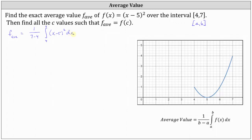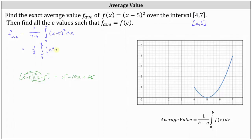To evaluate the integral, we'll either perform u-substitution or square (x-5). Let's go ahead and square (x-5). When squaring a binomial, there are always four products: x times x, which is x squared, then minus five x minus five x, which is minus 10x, and then plus 25. This means the average value is equal to one third times the definite integral from four to seven of x² minus 10x plus 25 dx.